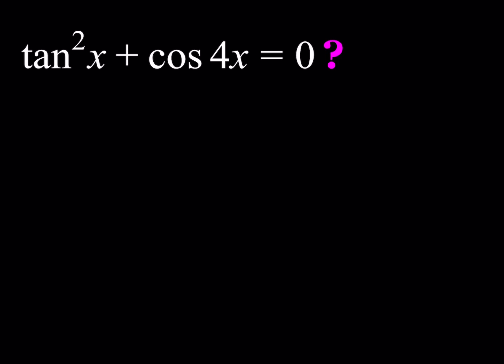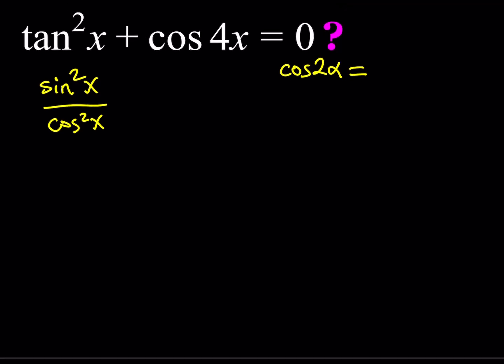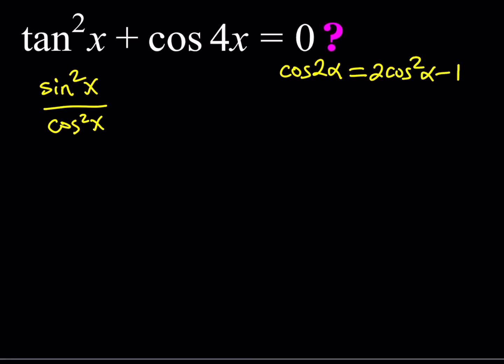The first thing I'd like to do is write tangent squared as sine squared over cosine squared. Next, I'd like to write cosine 4x using the double angle formula. As a quick reminder, there are three formulas for cosine 2 alpha, but we're going to use the one with cosine only: 2 cosine squared alpha minus 1. Applying that with alpha equals 2x gives us 2 times cosine squared of 2x minus 1 equal to zero.